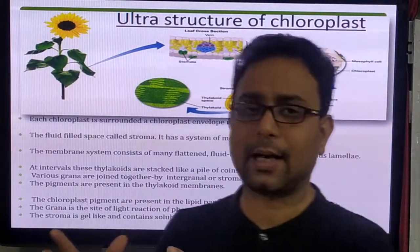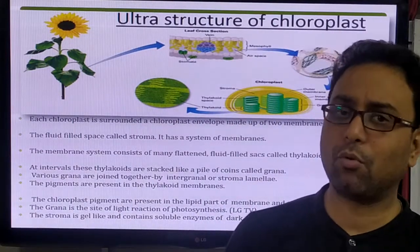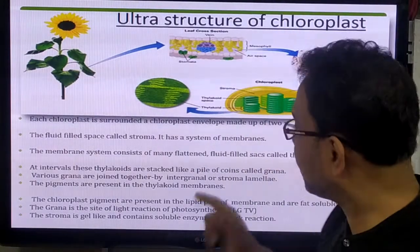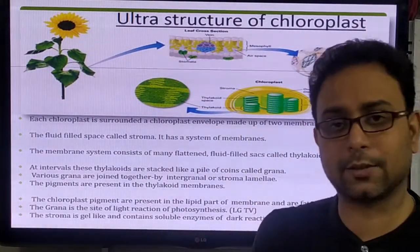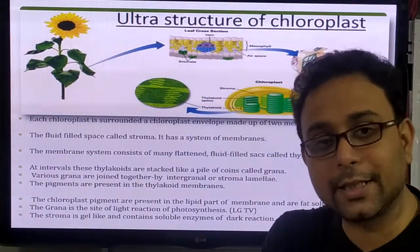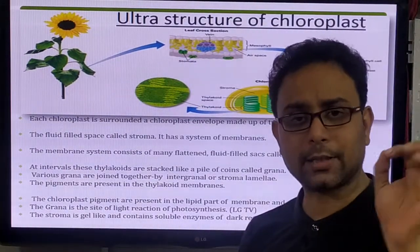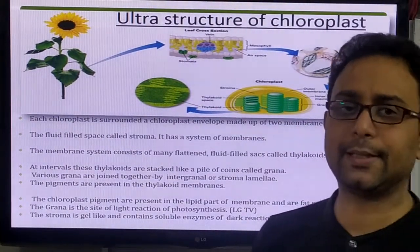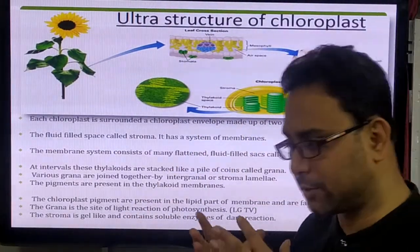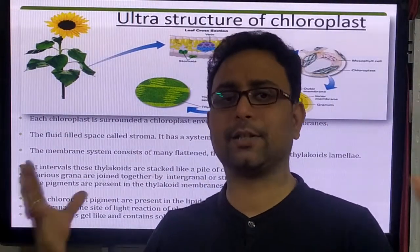Plants are green in color because chlorophyll is present. Chlorophyll is specially present in the chloroplast organelle. Inside the chloroplast, the chlorophyll is present, which gives the plant its green color. Another important structural part present in the plant cell is the vacuole. A large vacuole is present in the plant cell because it stores food, water, gas, and different materials.